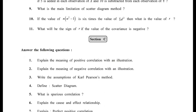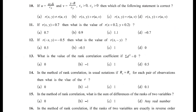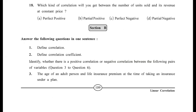Section B was left purposely for the conclusion of the chapter. Questions 1 and 2 cover defining correlation and correlation coefficient — theory already covered. Questions 3 to 6 ask you to identify whether there is positive or negative correlation between given pairs.